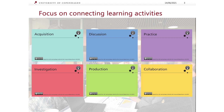The six learning types are: acquisition, inquiry, practice, production, discussion, and collaboration — all of which form the card set used in the workshop.